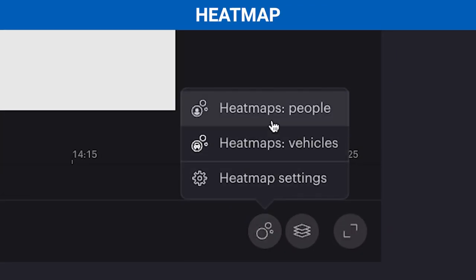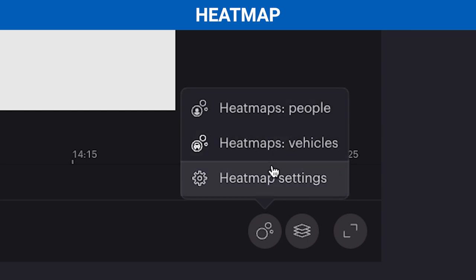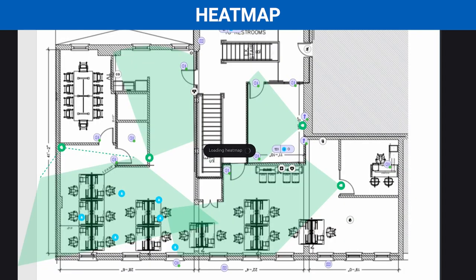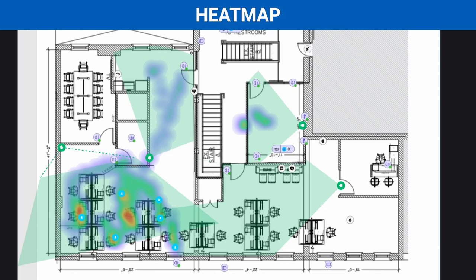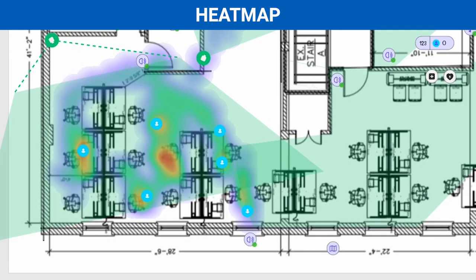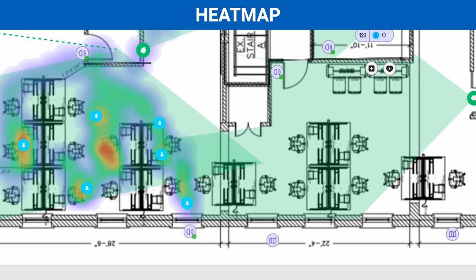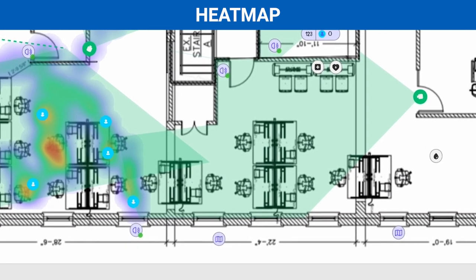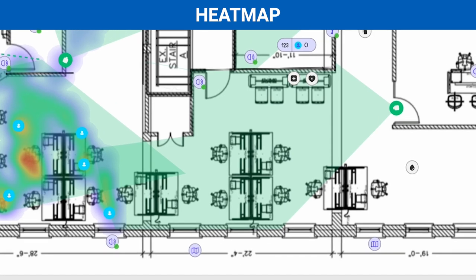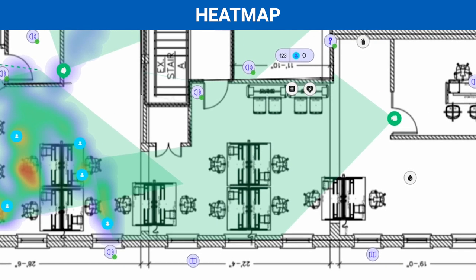From here, you can choose people or vehicles. For our case, let's go people. And boom, a dynamic heat map will automatically be generated. This is based on people's patterns over the past hour, or whatever time frame you've set up.